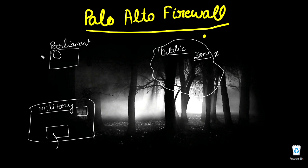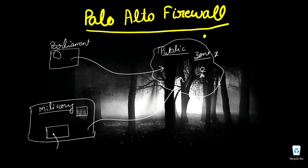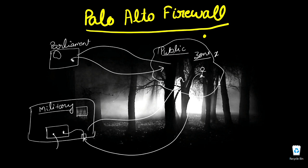From Parliament or military areas, personnel can visit public places with no restrictions. However, in reverse, a normal public person who wants to enter a military area will be restricted at the gate. They cannot enter without special permissions and can only visit limited areas with an escort. Similarly, they can visit certain areas of Parliament but not all.